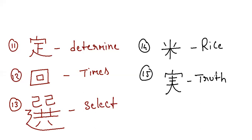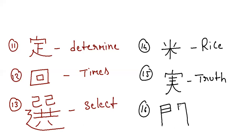Next is the kanji for involve, concerning, barrier, or connection. It has fourteen strokes: one through fourteen. This is the kanji for connection.